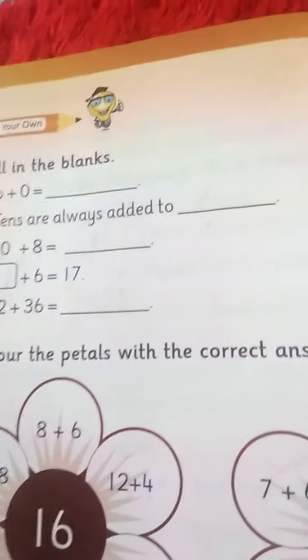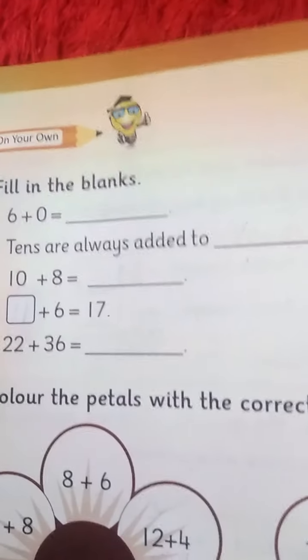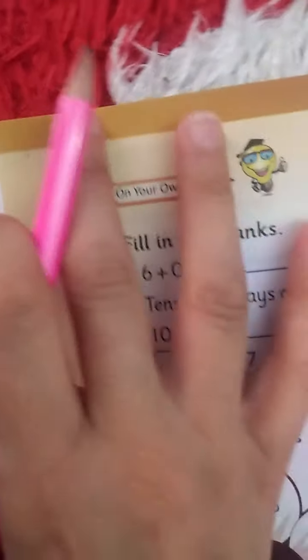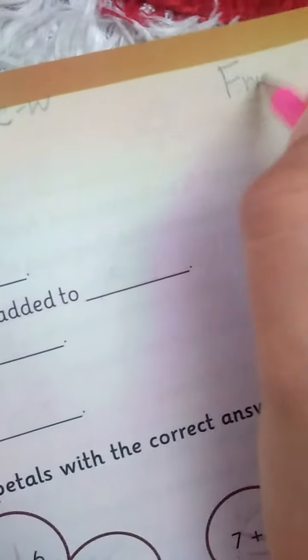First of all, write down the date on the top of your page. Today is 17th of July 2020. CW in the middle and then day is Friday.